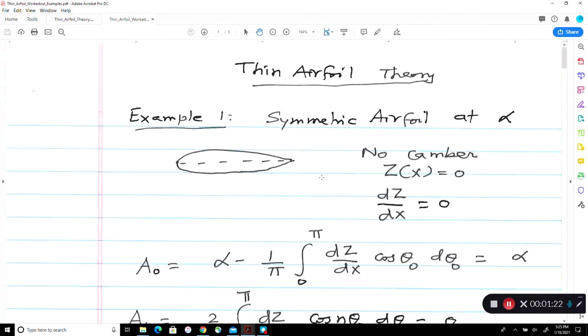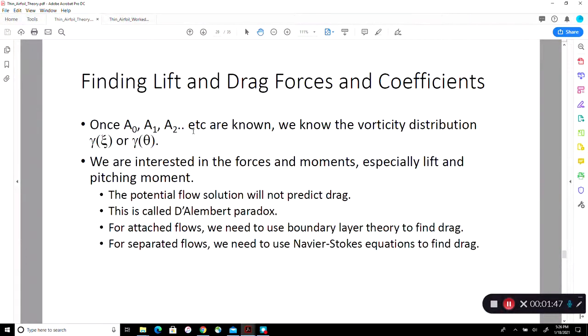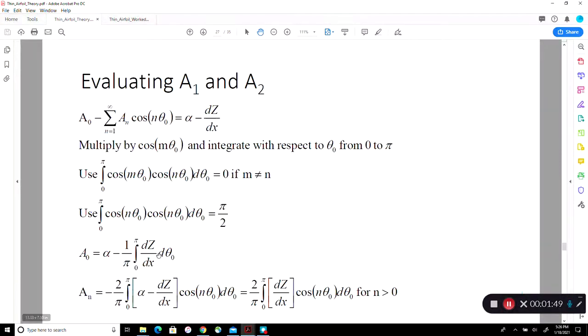So the first aerofoil case we are going to do is flow over a symmetric aerofoil. Symmetric means if this is a camber line, the aerofoil is equal thickness above and below. No camber. That means z of x is zero. Therefore dz over dx is zero, completely zero. Then from the slides we saw, we developed earlier, a naught, a1, an were all defined in here.